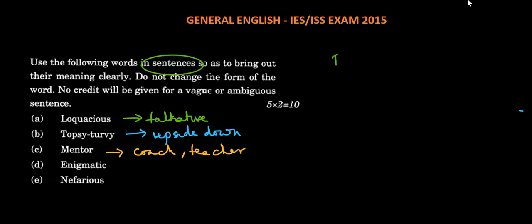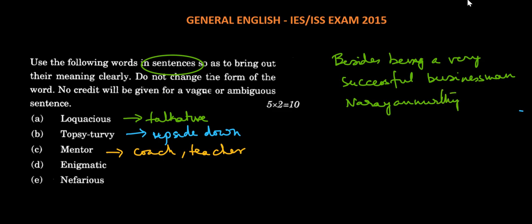The next one is mentor. Mentor means a coach or teacher. The sentence could be: Besides being a very successful businessman, Narayana Murthy is considered to be a great mentor of people.